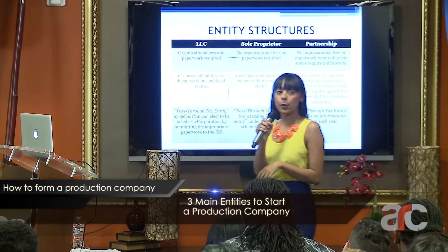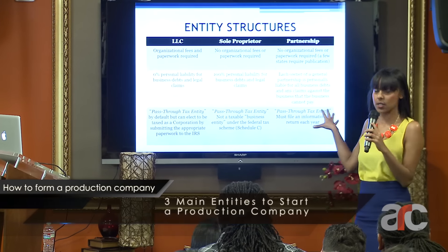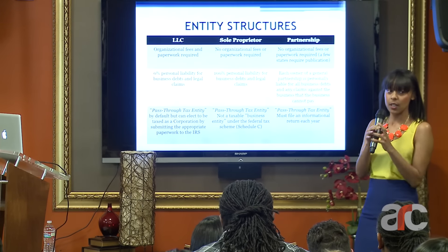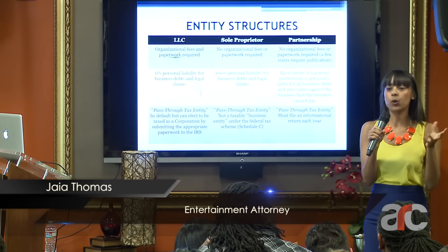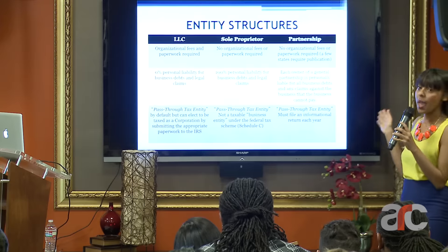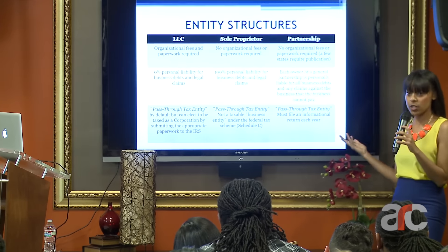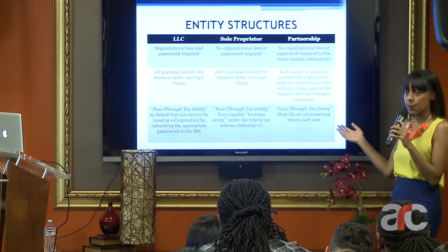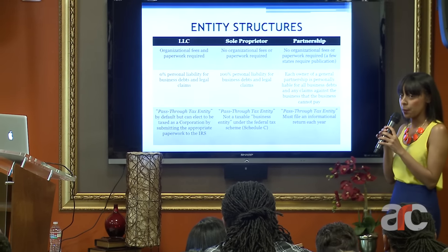I want to start off the presentation by going over the different entity structures. These are the three main types of entity structures. Now, these aren't the only ones — there are about 20 different structures — but I'm not going to go over all 20. These are the three main structures that most production companies use when starting out: the first is a limited liability company, the second is a sole proprietorship, and the third is a partnership.